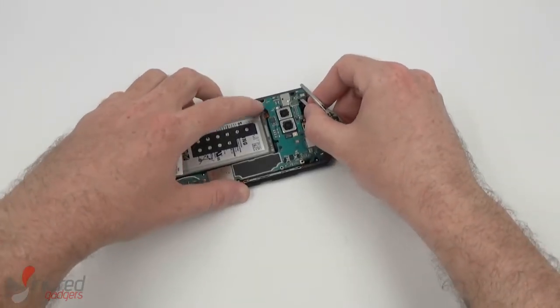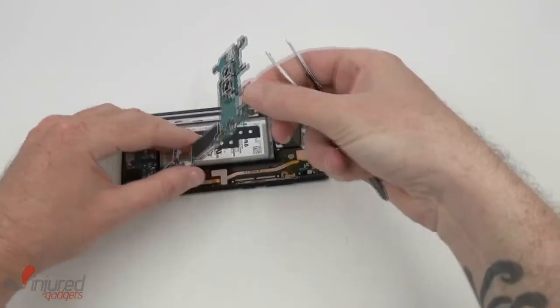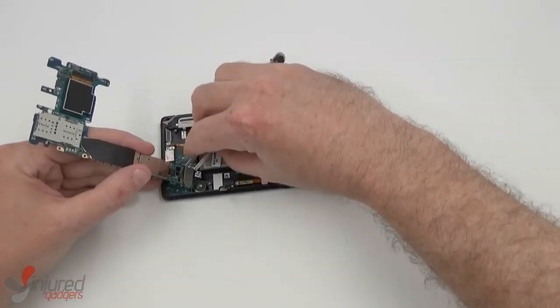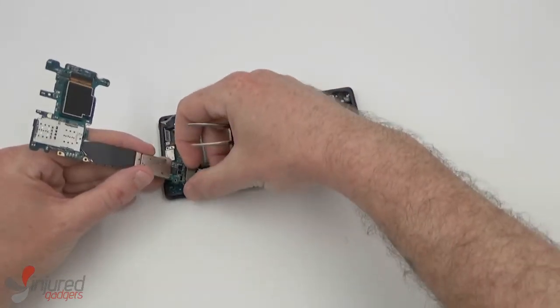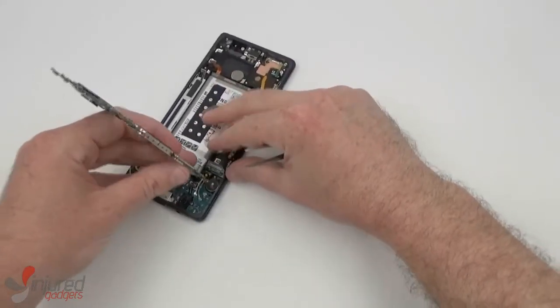Now that all the screws are removed and the SIM tray is out, we can remove the main board and disconnect it from the dot connector here. I would recommend using a nylon spudger or fingernails and not a metal tweezer like I was about to use.